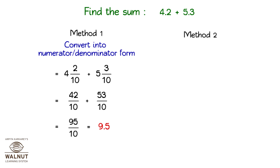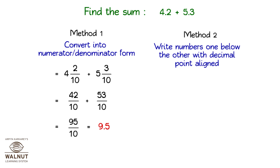Method 2: Write numbers one below the other with the decimal point aligned. 4.2 plus 5.3 is equal to 9.5.